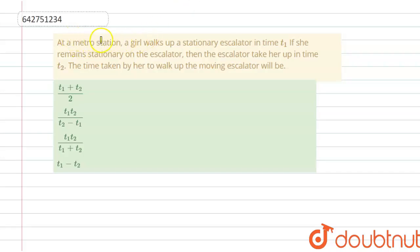At a metro station, a girl walks up a stationary escalator in time t1. If she remains stationary on the escalator, then the escalator takes her up in time t2. The time taken by her to walk up the moving escalator will be?